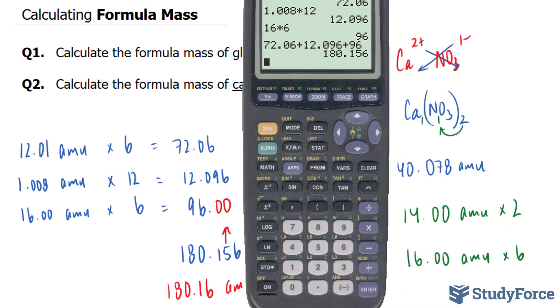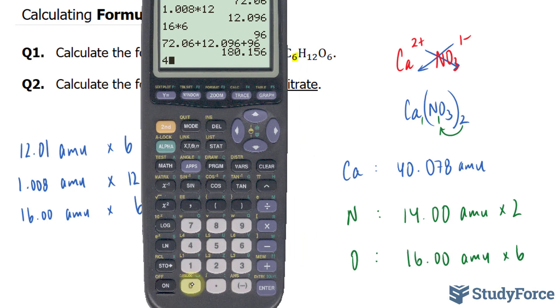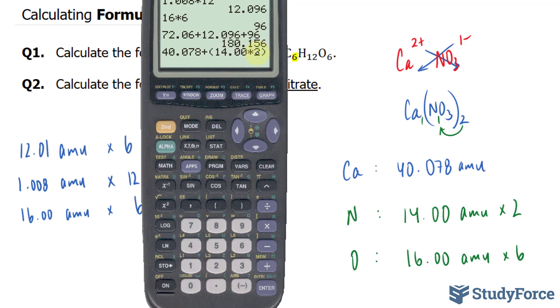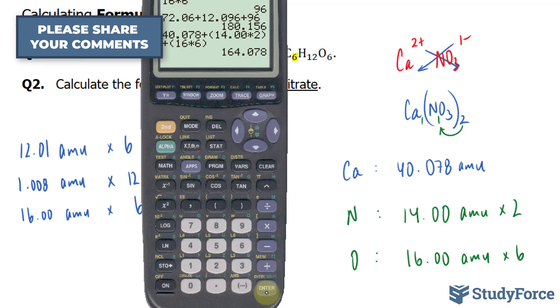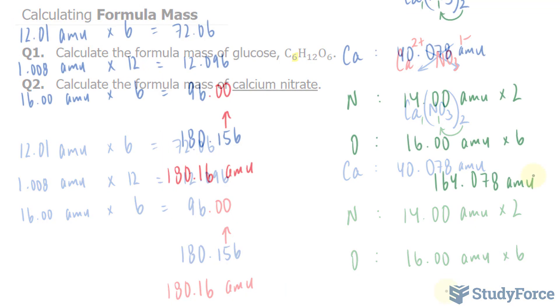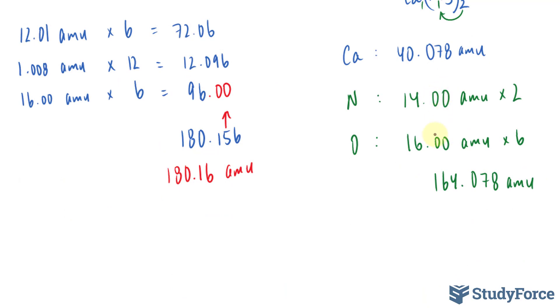Using our calculator again, starting with 40.078, I'll add this number and try to do this all in one step by 14.00 times 2. Notice that I put brackets around the expression, plus another set of brackets open, 16 times 6. And this gives us 164.078, and given that these two numbers both had two numbers after the decimal, our number should have the same. So this will go up by 1, and we have 164.08 AMU.